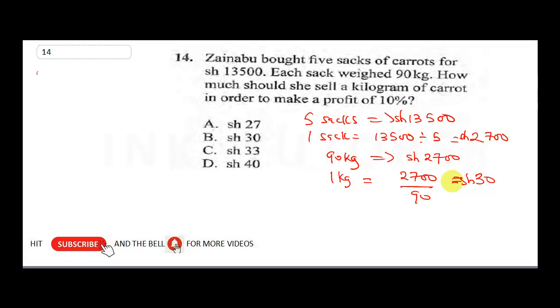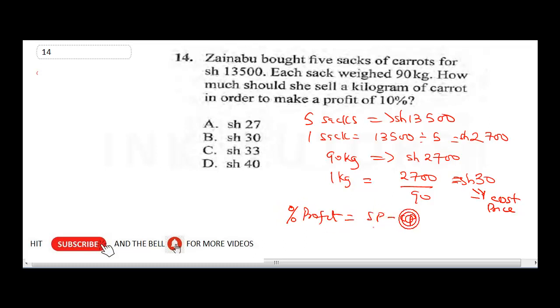Now, this is where the question lies. How much should she sell a kilogram of carrots in order to make a profit of 10%? So all you need to know is this is her cost price. So for how to make a profit, we need to bring in our profit formula. Remember, your percentage profit is selling price minus cost price over cost price times 100 over 1. Now, we don't know our selling price, and that is what we are looking for.